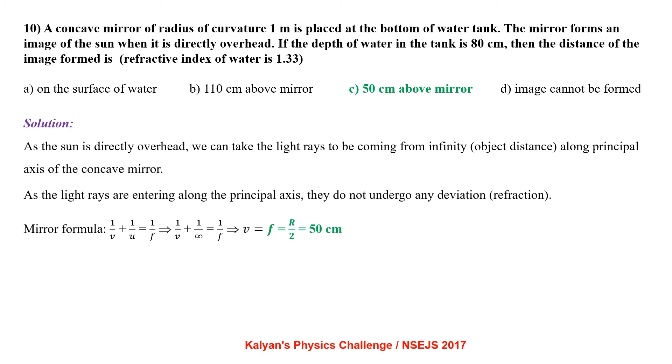As the light rays are entering along the principal axis, they do not undergo any deviation. Applying mirror formula 1 by V plus 1 by U equal to 1 by F, we get F equal to R by 2 that is 50 cm.